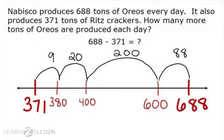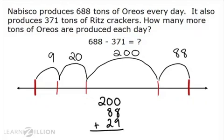Now let's add our hops. 9 plus 20 is 29, plus 200 plus 88. We can line this up vertically, or if we wanted to do this in our head, we can make it easier by adding one to 29 and taking one away from 88.